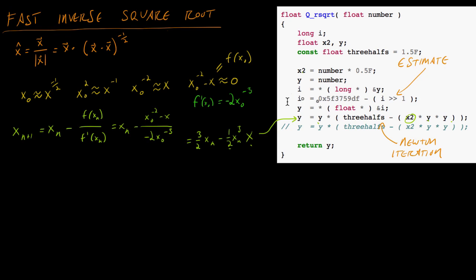So the only question is: what is the initial estimate? It takes Y, finds its address and casts it to a long pointer — which is like an integer pointer — and dereferences that pointer. What that does is, instead of converting the floating point number to an integer, it takes the actual bits from the floating point number and interprets them as an integer. So it's getting at the actual bits and manipulating them directly, rather than having the computer convert it to the equivalent value of a long.